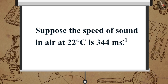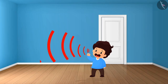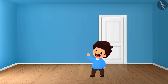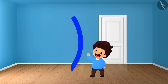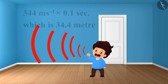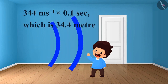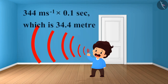Now, suppose the speed of sound in air at 22 degrees Celsius is 344 meters per second. The sound must hit the obstacle and reach the ear of the listener after 0.1 seconds. So, the distance travelled by the sound from its source to the reflecting surface and back to the listener should be at least 344 meters per second multiplied by 0.1 seconds, which is 34.4 meters.